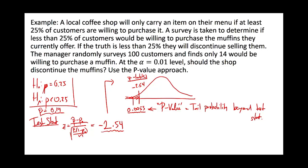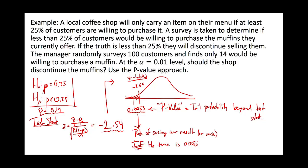What this p-value is essentially saying is: the probability of seeing a result like ours — or worse — given that H₀ is true, is 0.0055. It's a conditional probability. We saw something at 14%, and we'd only see something that low less than 1% of the time if the null hypothesis were true. So does it seem like the null hypothesis is probably true? No — because what we observed is very unlikely under it.